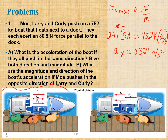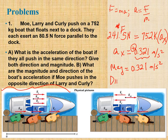The question asks for both direction and magnitude. The magnitude is simply the value: 0.321 meters per second squared. The direction is given by the sign of the acceleration — in this case it's positive, so the direction is in the positive x direction, moving toward the right.